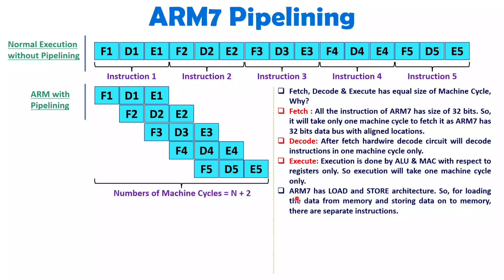ARM7 has a load and store architecture. We are having separate instructions for load as well as for store. As we have separate instructions, you don't need to worry about the time period of fetch, decode, and execute — it will be fixed only. ARM does not support a common instruction for load and store. You will have to load the data first into memory, that will be taken inside a register first, after that only you will be operating with registers. And once the operation is completed, by another instruction you will have to store that onto memory. So separate instructions will get executed for load and for store, and the time period of fetch, decode, and execute will be fixed — it will take only one machine cycle.